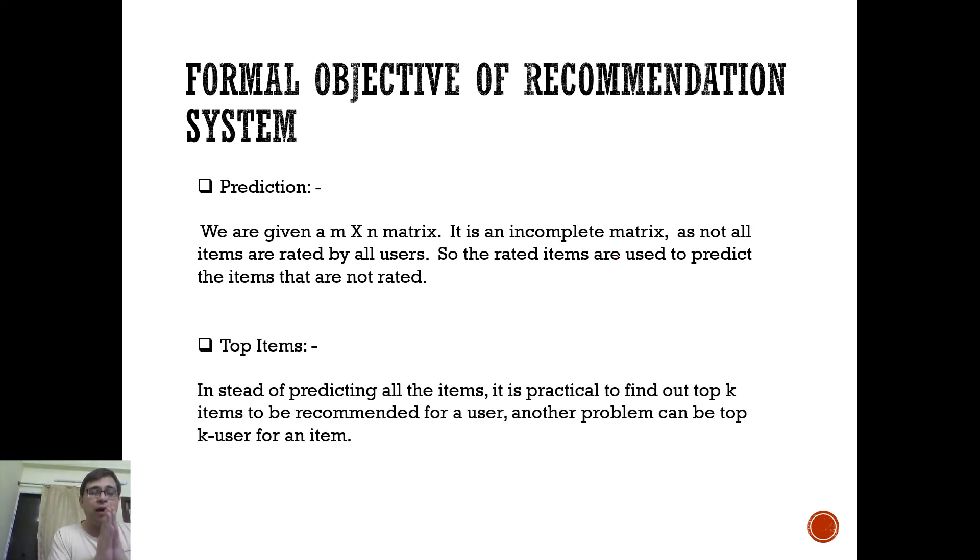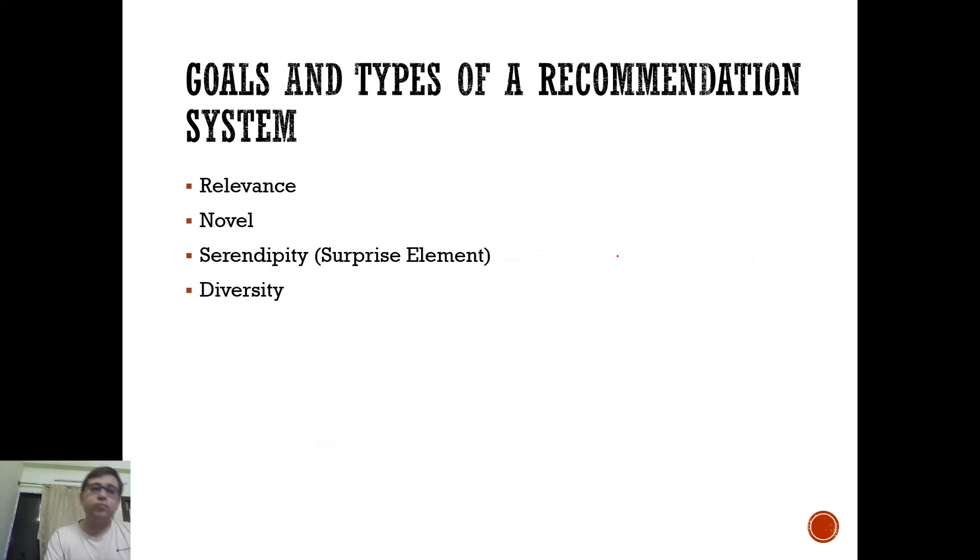And another way of thinking of the same goal is, instead of predicting the rating for all the items, it may be practical to find out top K items to be recommended for a user. So I don't want to fill out all the ratings, but for a particular user, I want to find out maybe top five products that are to be predicted or recommended to you. Another problem can also be top K user for an item. So a new item is getting launched, which top users are more likely to buy that product.